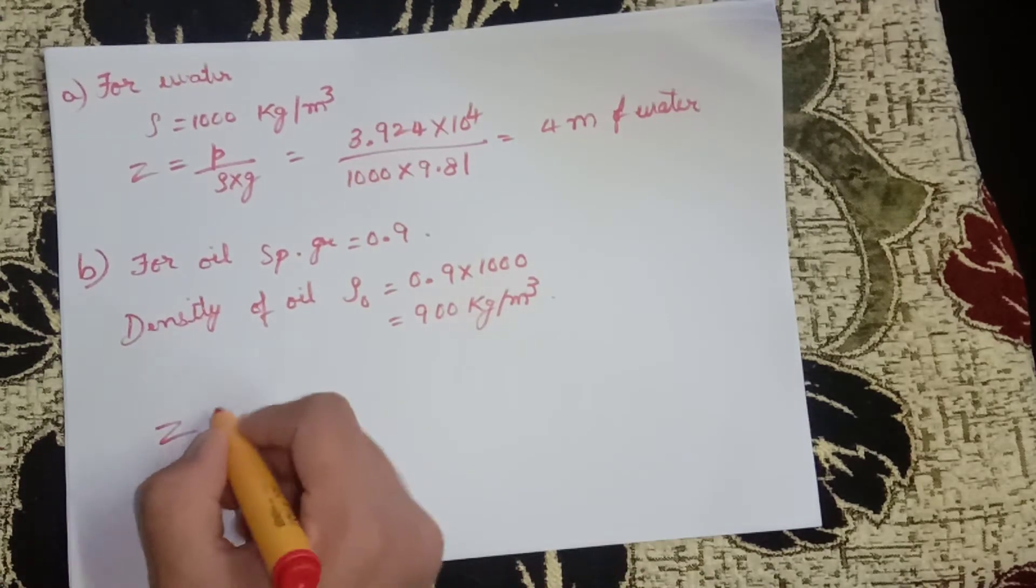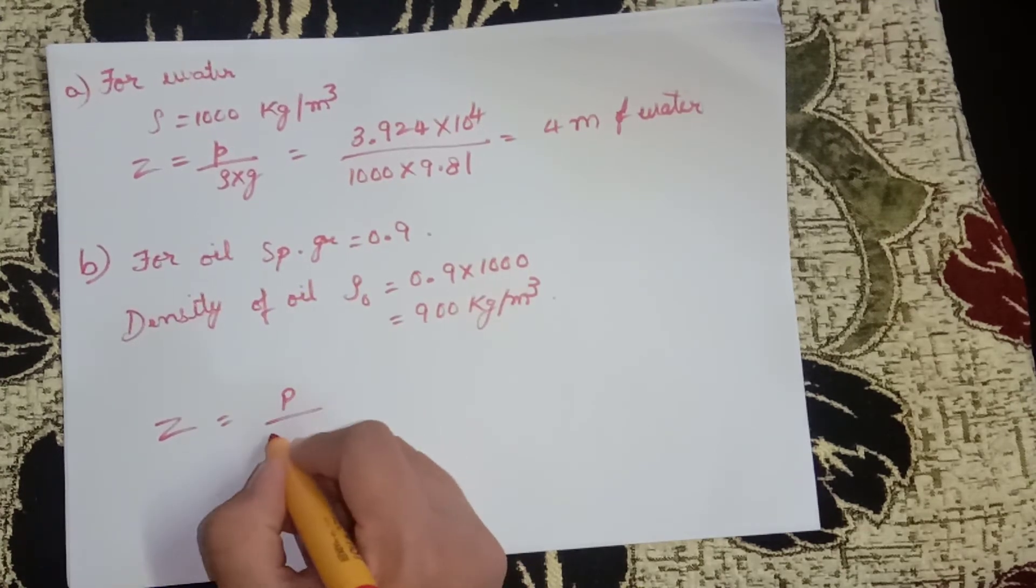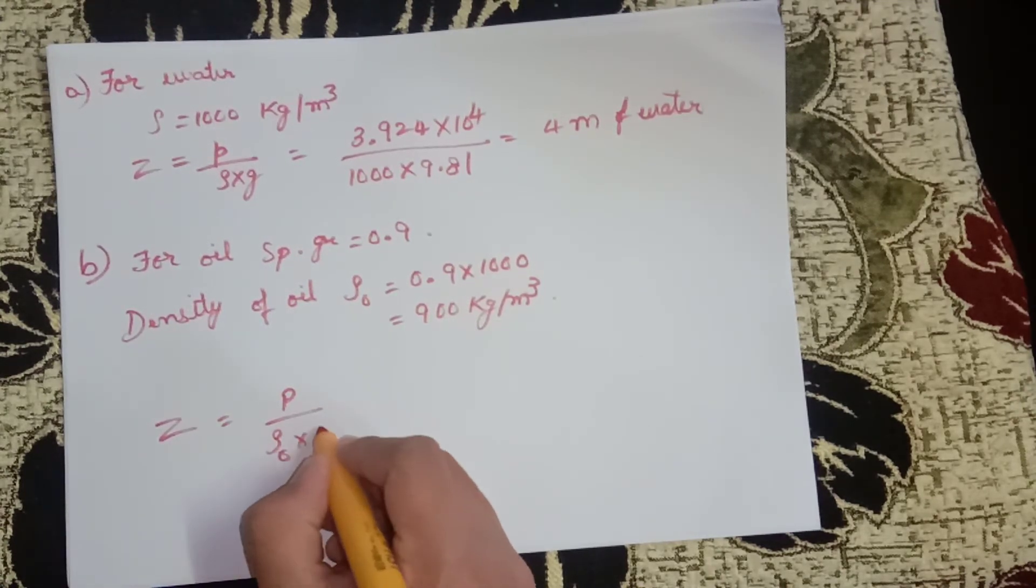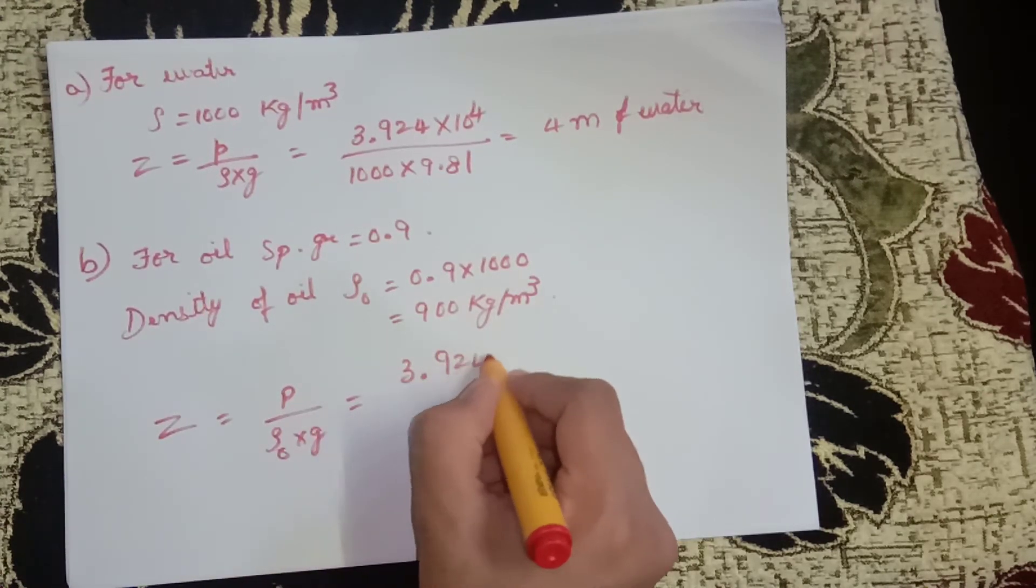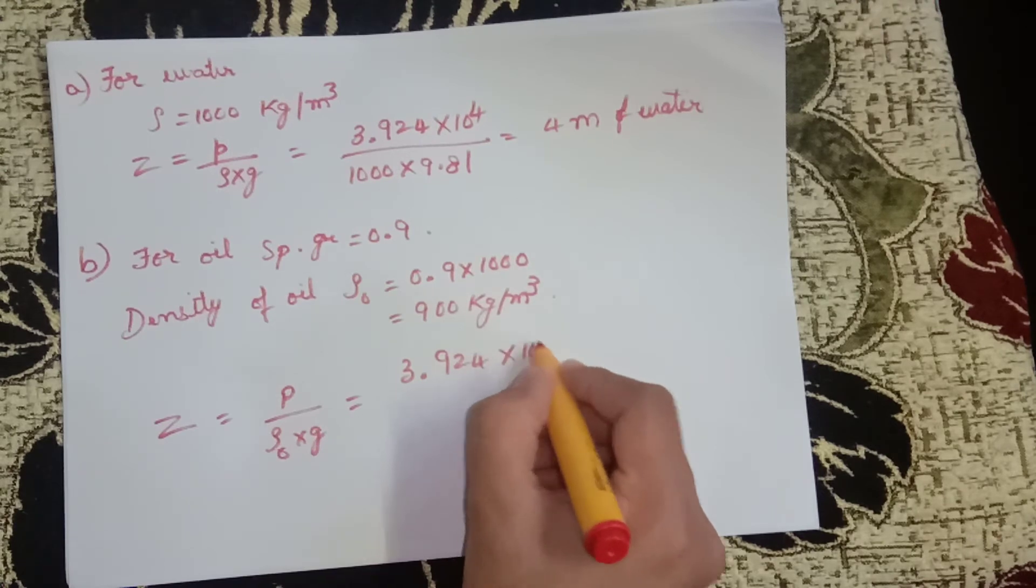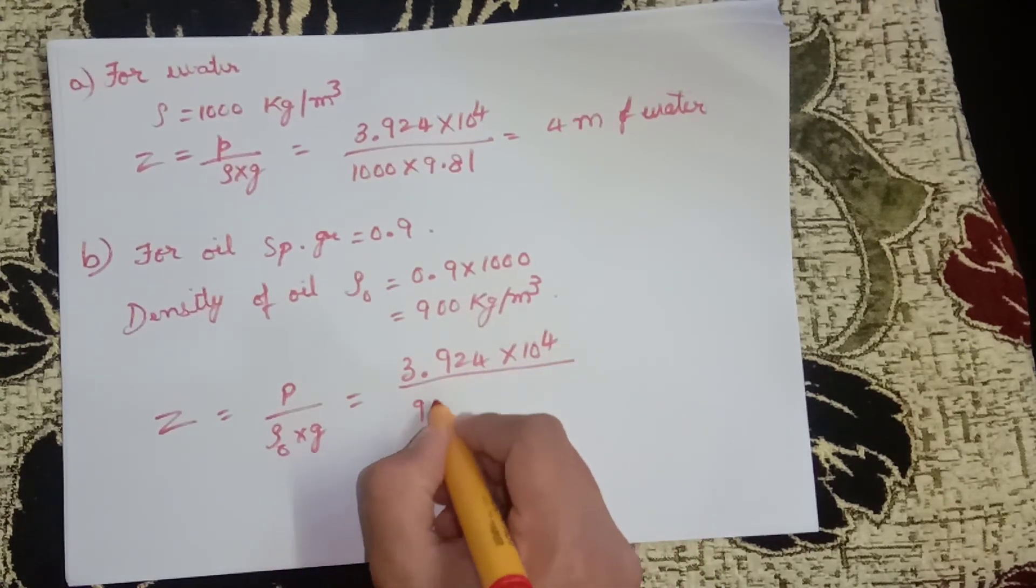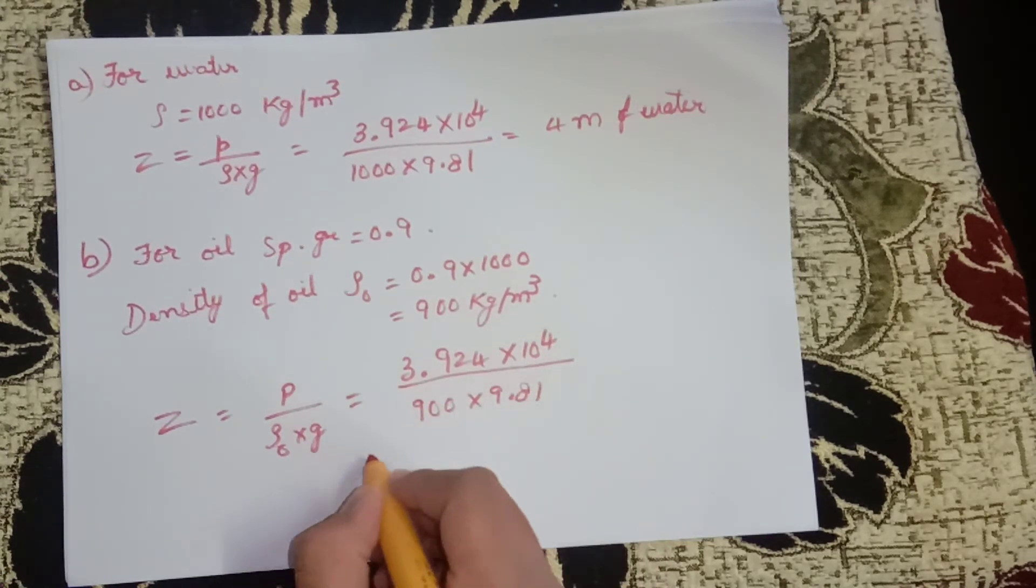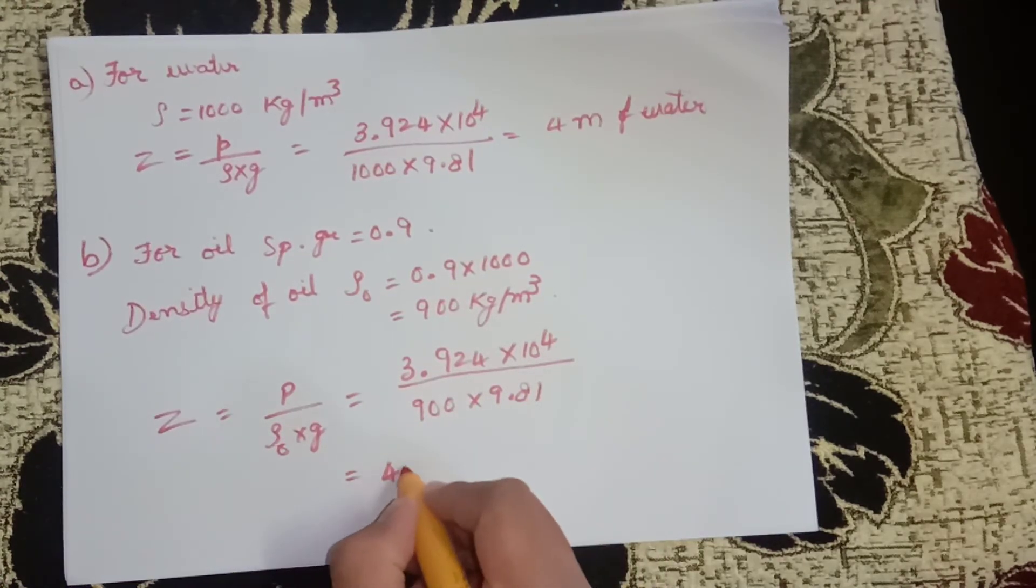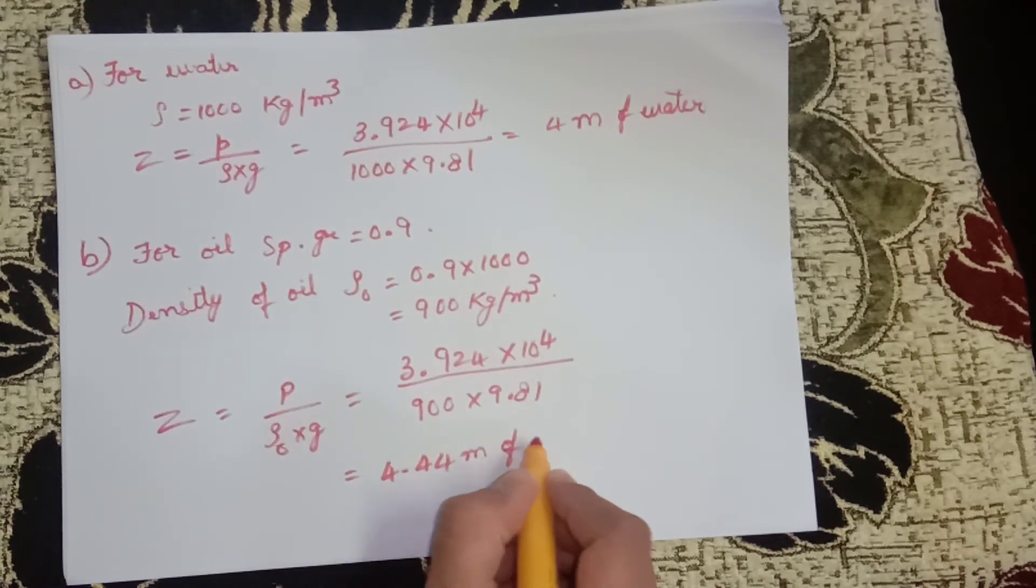Then z equals P divided by rho₀ times g, that equals 3.924 × 10⁴ divided by 900 × 9.81, that is 4.44 meters of oil.